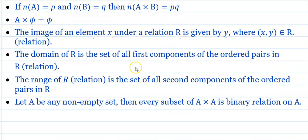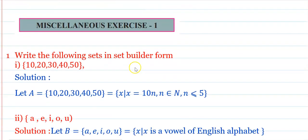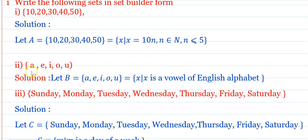Now I will start the miscellaneous exercise. Question 1: Write the following sets in set-builder form. The set {10, 20, 30, 40, 50} — let A = {10, 20, 30, 40, 50}. In set-builder form: A = {x : x = 10n, where n belongs to the set of natural numbers and n is less than or equal to 5}.